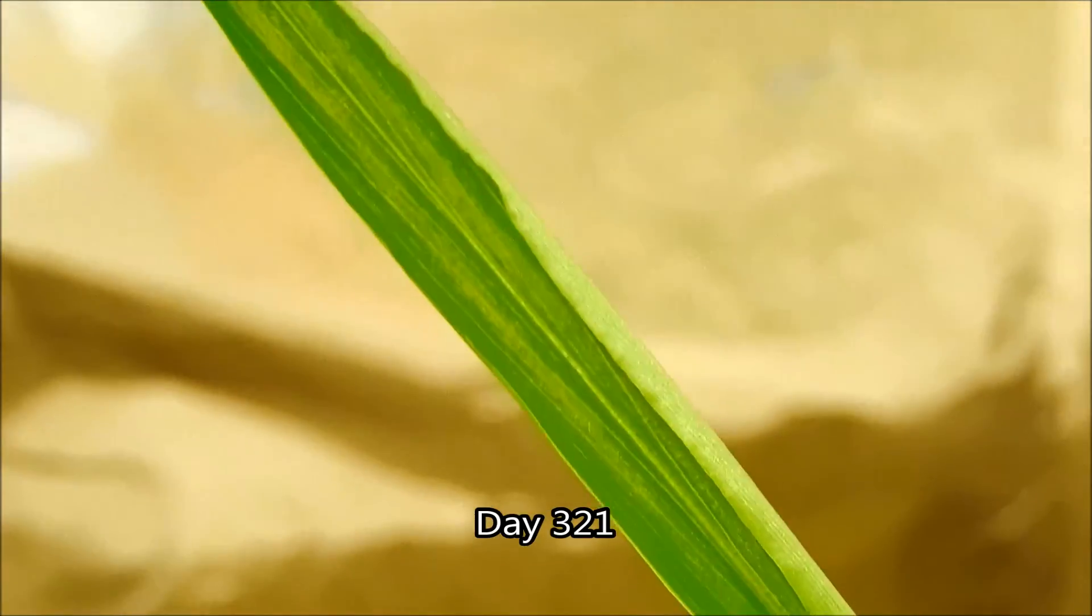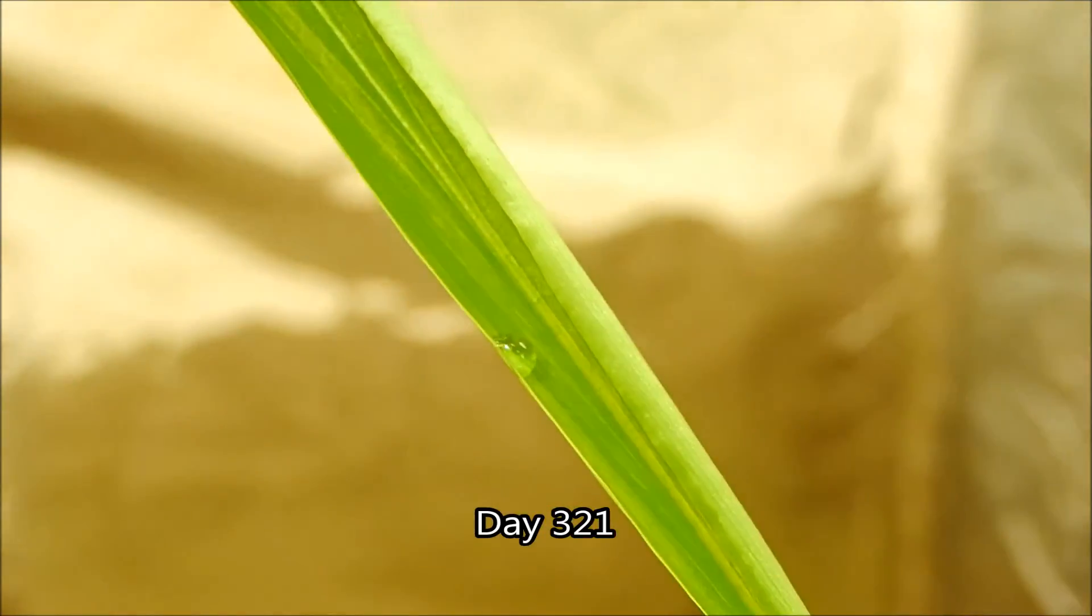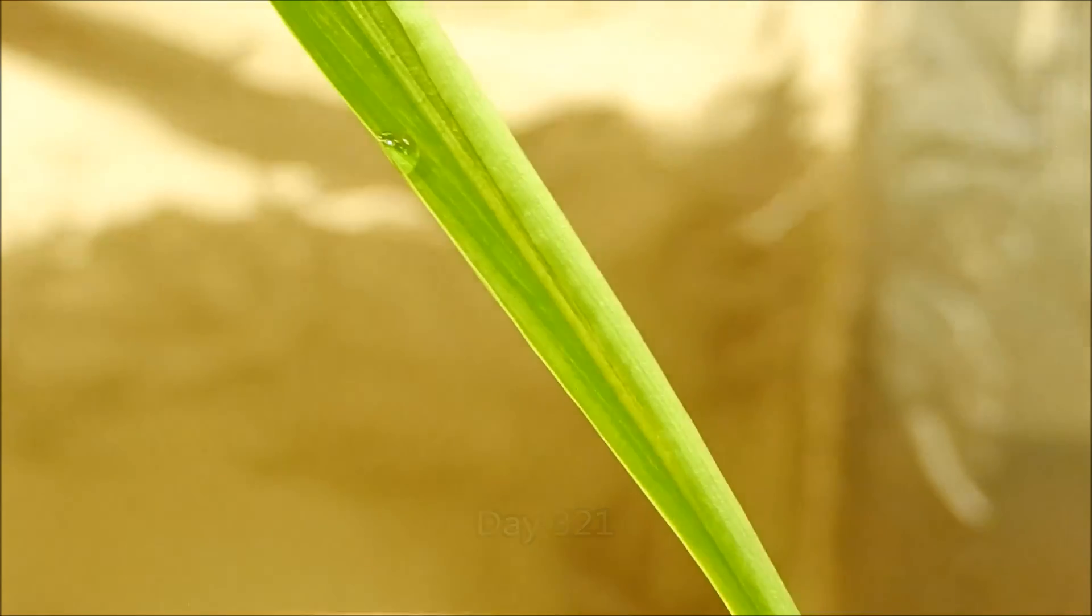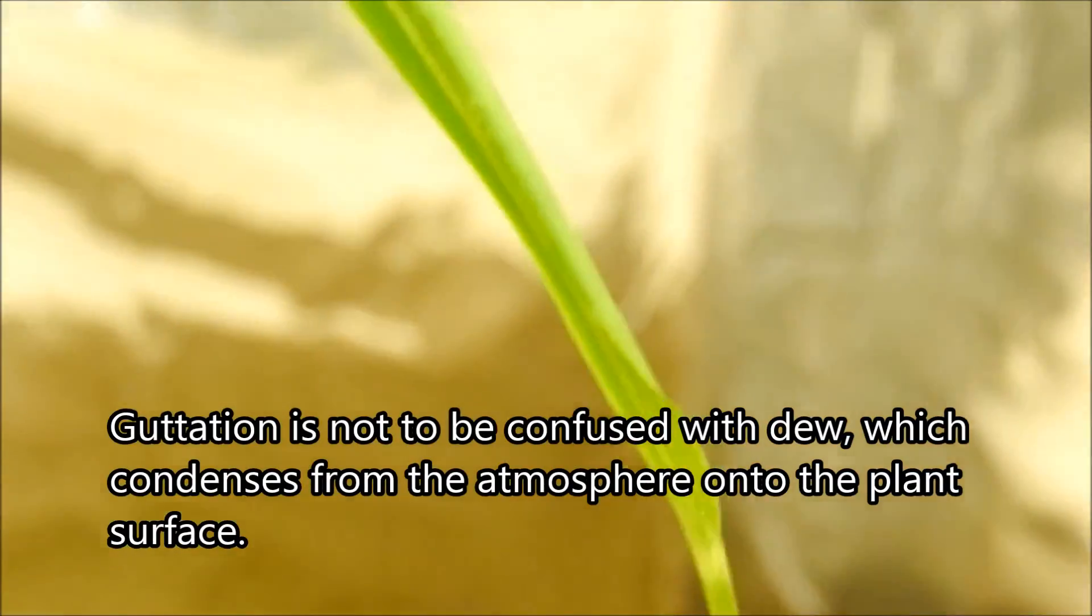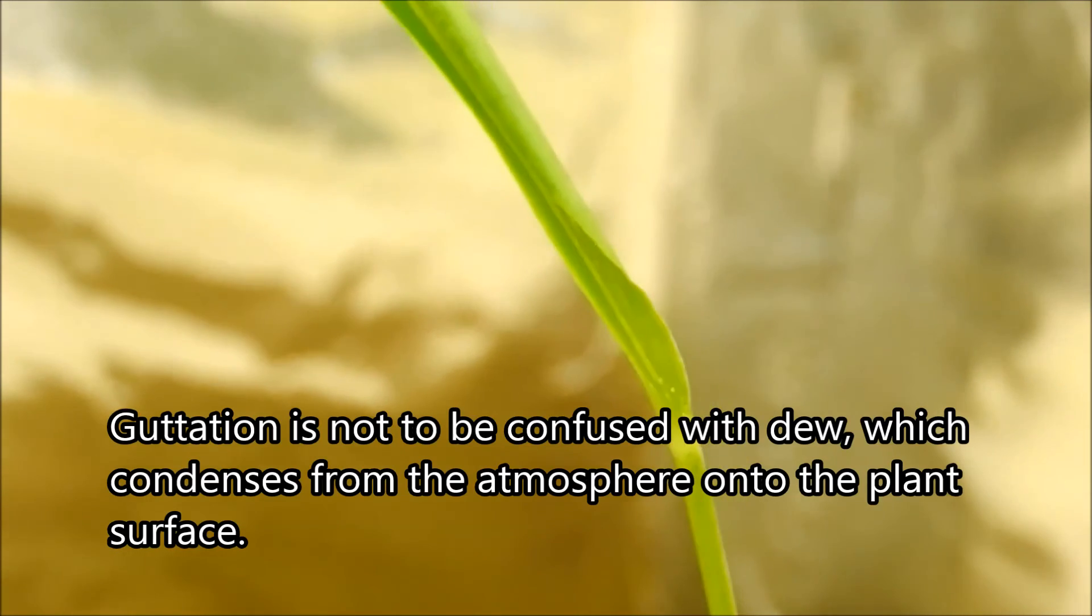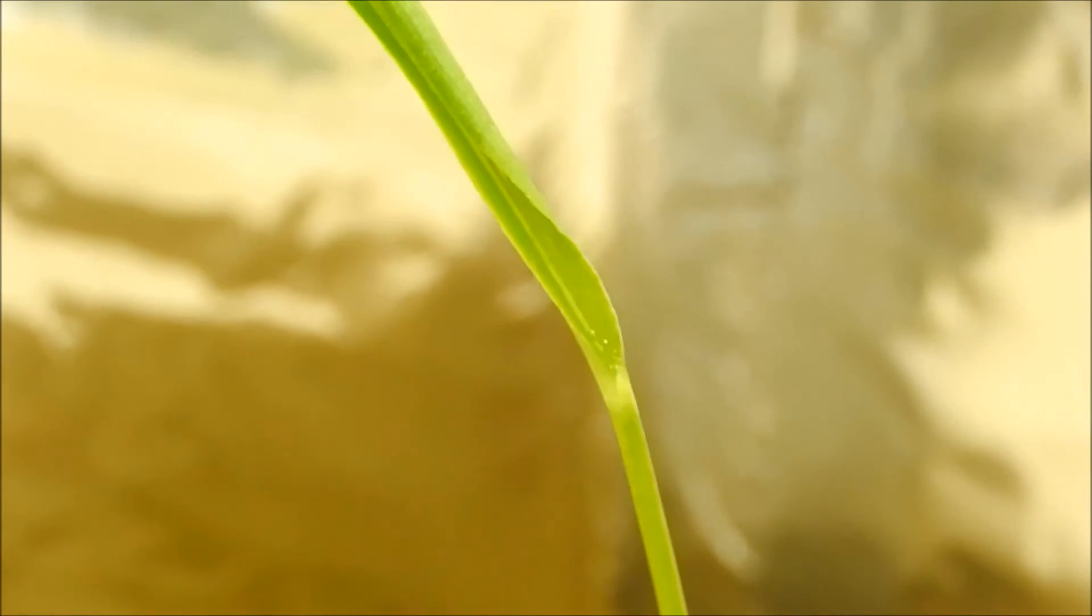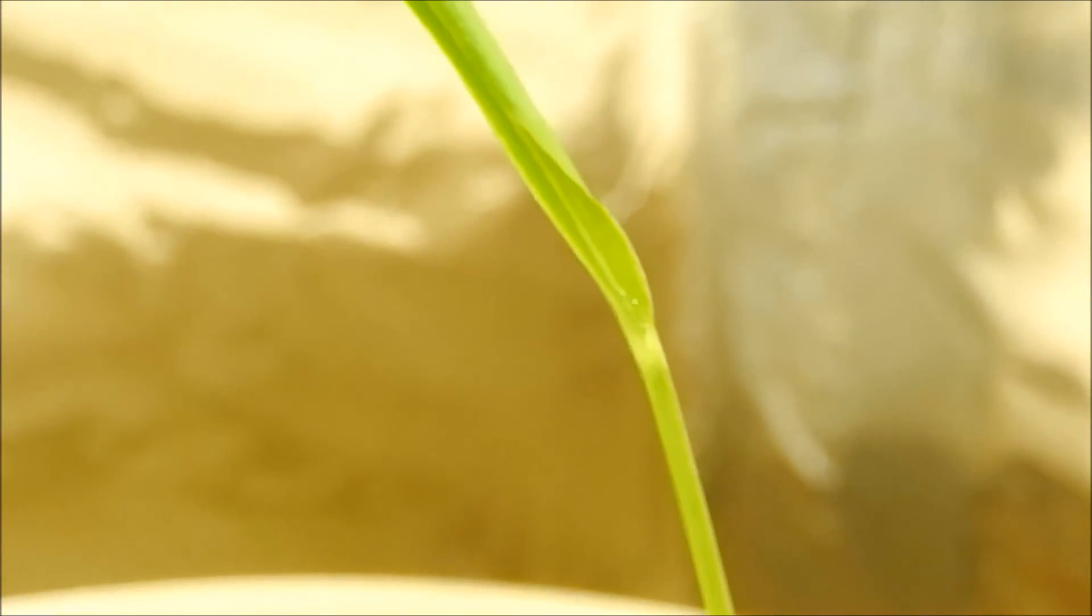It's morning, day 321, and I'm showing you more examples of gutation. It occurs at the leaf edges and at leaf tips. I think the tendency is for it to occur on the highest leaves, not sure why, or maybe just the biggest ones.